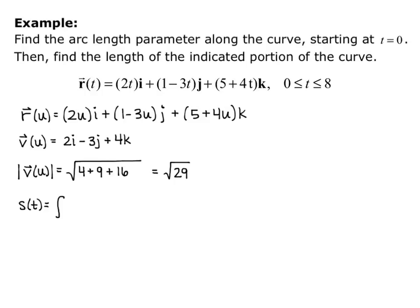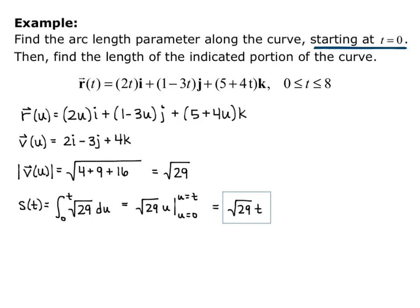Now I need the magnitude of velocity: |v(u)| = √(2² + (−3)² + 4²) = √(4 + 9 + 16) = √29. So my arc length parameter s(t) is the integral from 0 to t of √29 du. Since I have a constant, that's √29 · u evaluated from u = 0 to u = t, which gives s(t) = √29 · t.